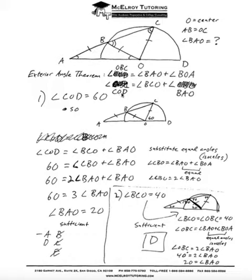And then I have angle COD, this angle here, is equal to angle BCO up here, plus angle BAO over here. This is a pretty esoteric theorem, so if you don't know it, try to commit it to memory. It does come into play every now and then.